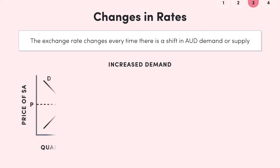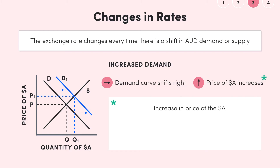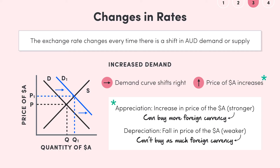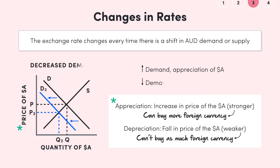Any increase in Australian dollar demand will shift the demand curve to the right from D to D1, and we see that the price of Australian dollars increases from P to P1. Under a floating system, an increase in the price of Australian dollars is referred to as an appreciation — the Australian dollar is now stronger and can buy more foreign currency than before. Any fall in the price of Australian dollars is a depreciation, meaning the dollar is weaker. A decrease in demand for Australian dollars causes the demand curve to shift left from D to D2, driving an Australian dollar depreciation as P falls to P2.